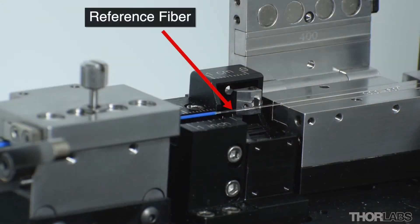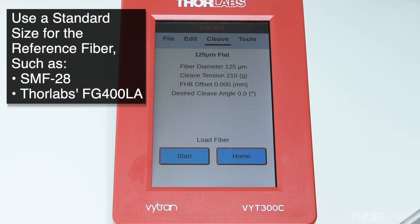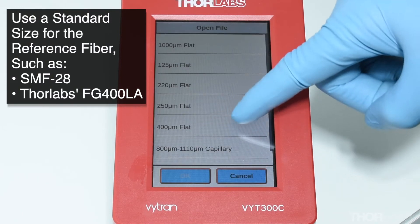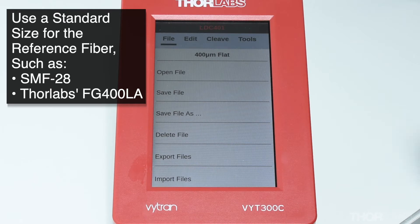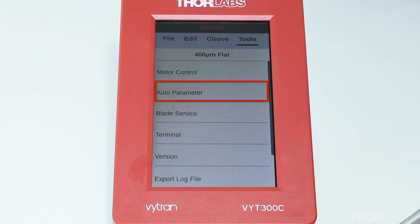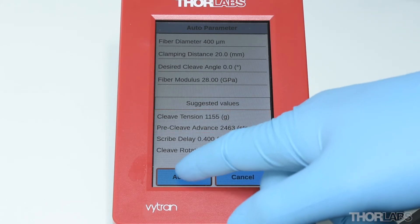When verifying the blade offset, it is helpful to use a piece of fiber as a reference. Use the handset controller to either load or set up a cleave file for a standard fiber size which matches your reference fiber. For example, SMF28 or Thorlabs FG400LA can be used. If the original factory file has been modified, the auto-parameter tool on the handset can be used to ensure that the correct cleave tension and pre-cleave advance are set for the reference fiber's diameter.